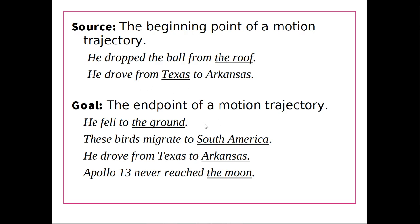A goal is the opposite of a source — it's the end point of a motion trajectory. If he fell to the ground, the ground is where the falling ended. These birds migrate to South America — that's where the migration ends. He drove from Texas to Arkansas — that's where the driving ends. Apollo 13 never reached the moon — that's where the motion would, in theory, end, though we have negation here, so it's where the lack of motion ended or didn't end. It's the end point of the potential motion trajectory.